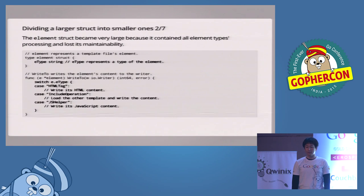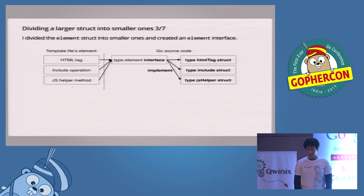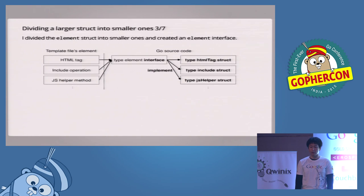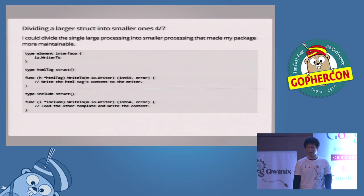To make this package simple and extensible, I divided the element struct into smaller ones, such as an HTML tag struct and an include struct, as this figure shows. And I created an element interface and made each struct implement this interface. I defined the element interface in which the IO write-to interface was embedded. And I defined the HTML tag and include struct and made them implement the write-to method so that they implemented the element interface. By having done this, I could divide a single large processing into smaller ones, and that made my package more maintainable and extensible.